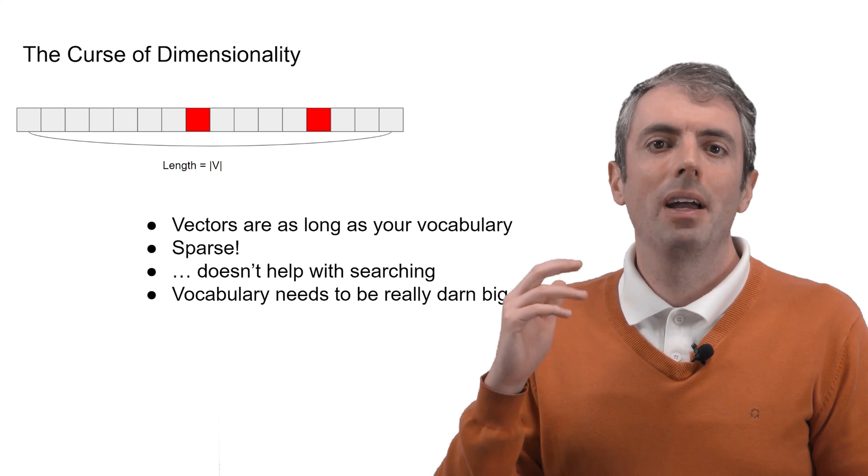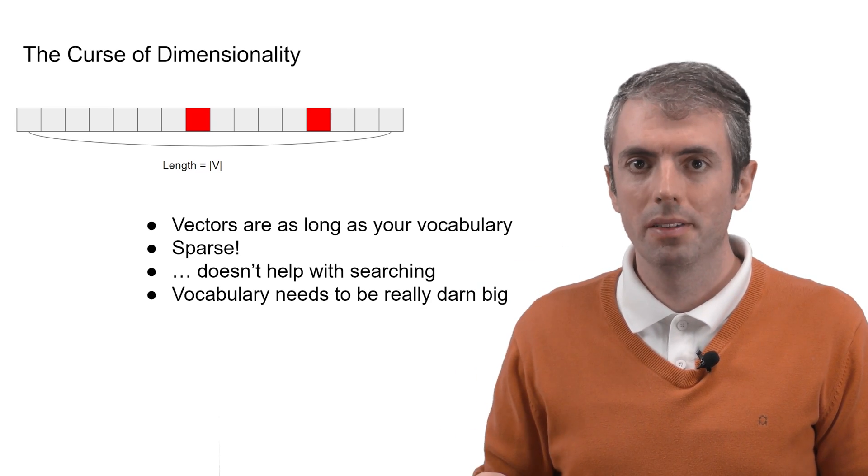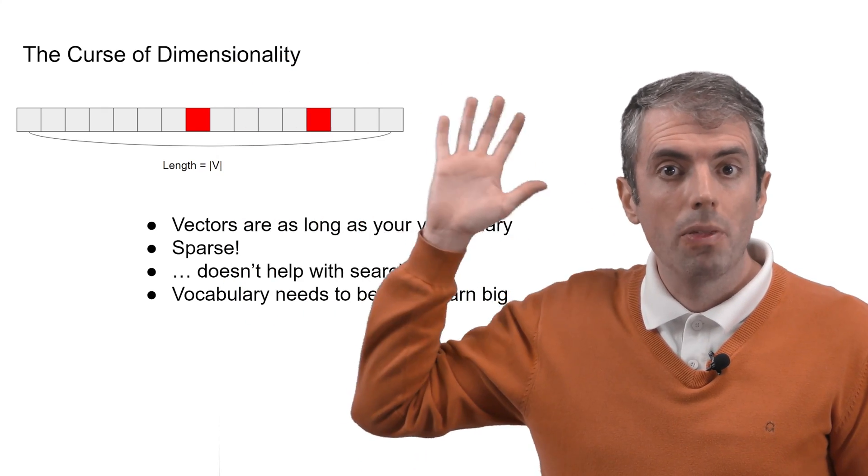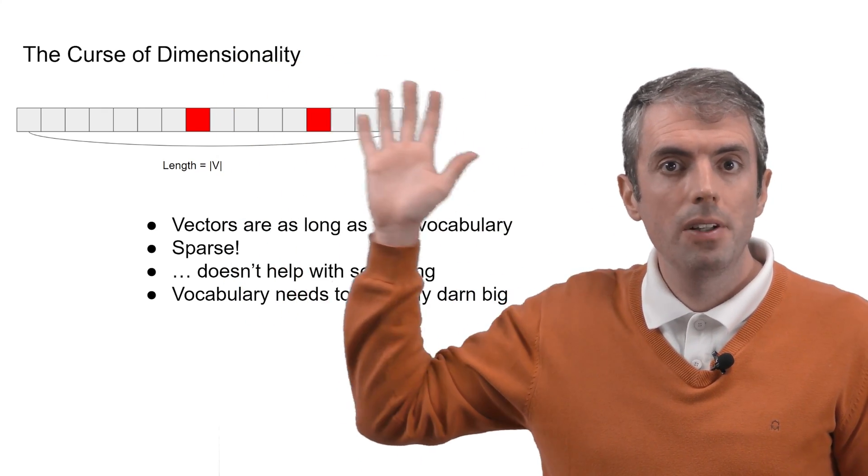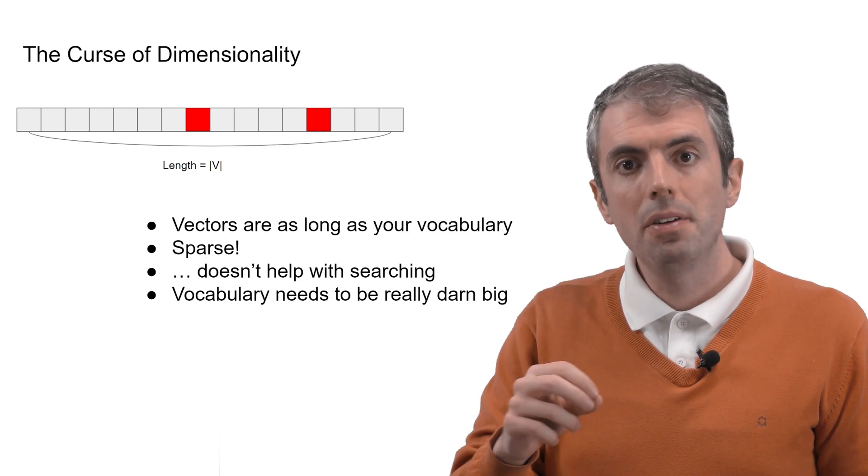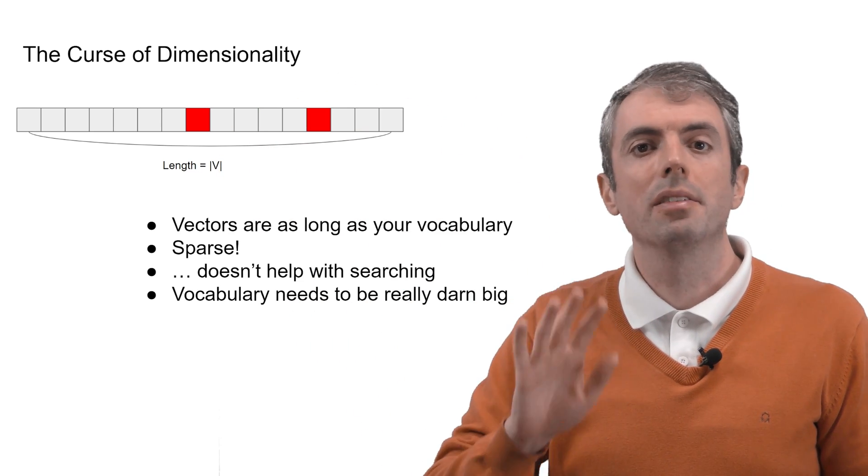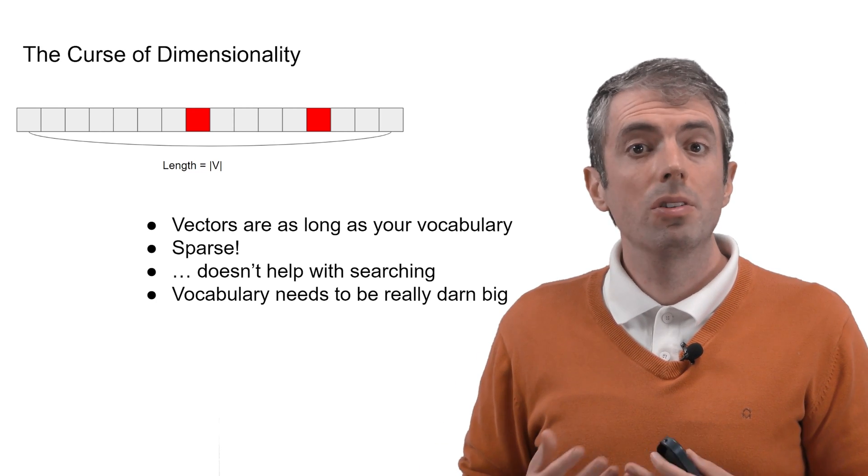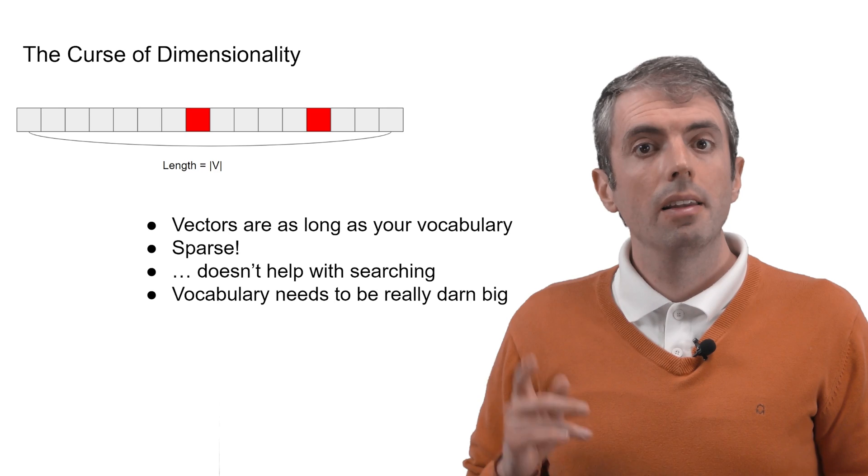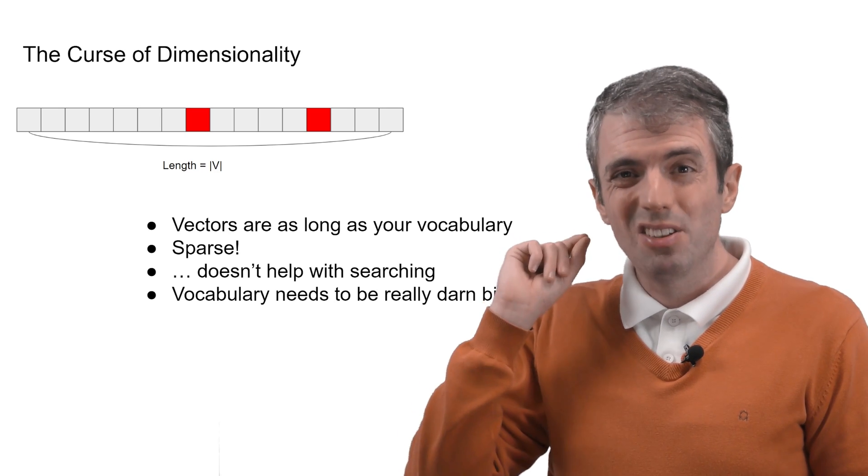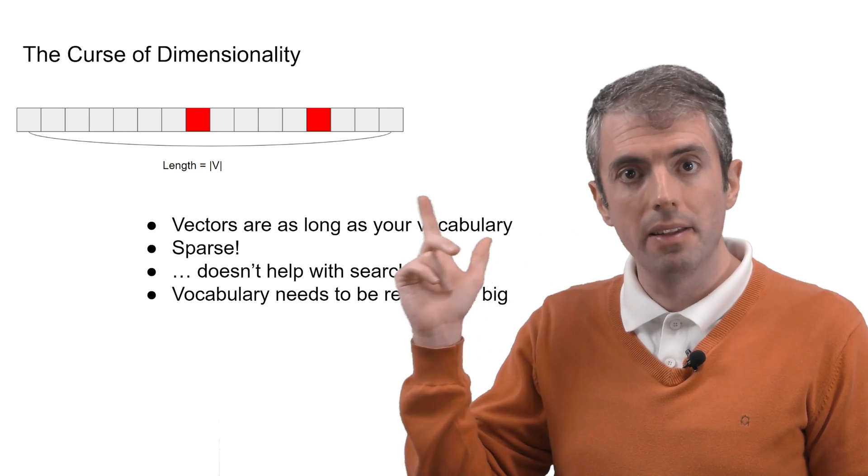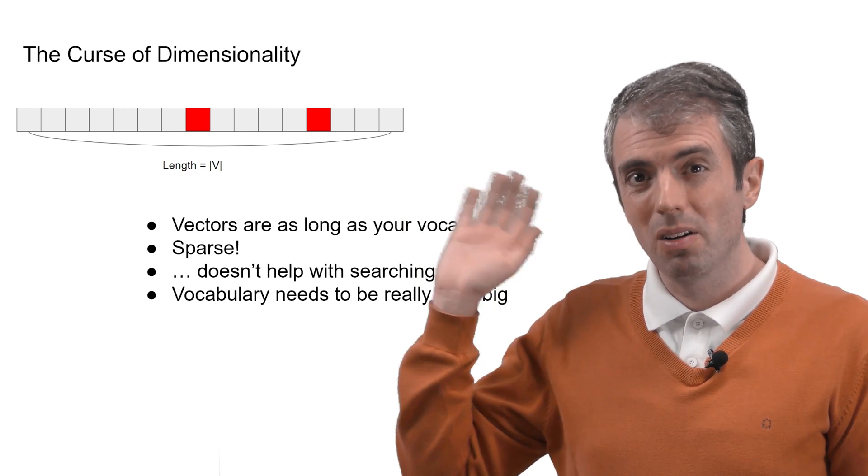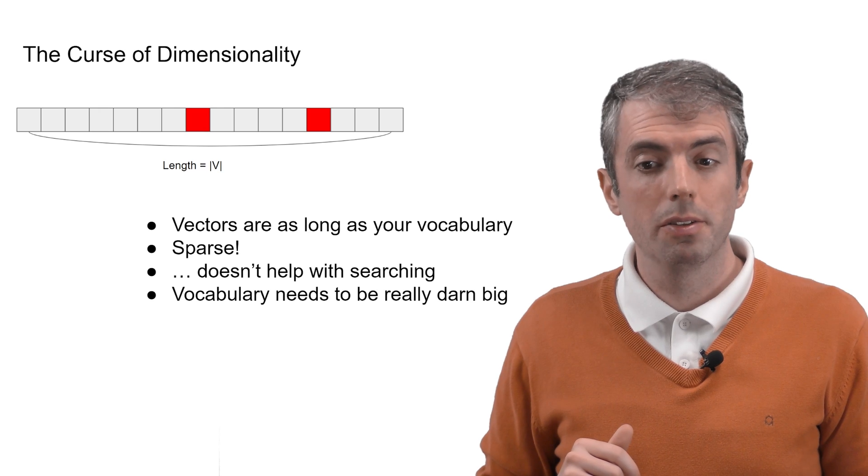Now, you remember how a traditional information retrieval system works. You get a sparse vector with weights for individual words. How those weights are assigned or set isn't really important. It could be TF-IDF, BM-25, or just raw word counts. Let's focus, however, on the dimensionality, how big this vector is, and how you can match these large vectors in a very high dimensional space.